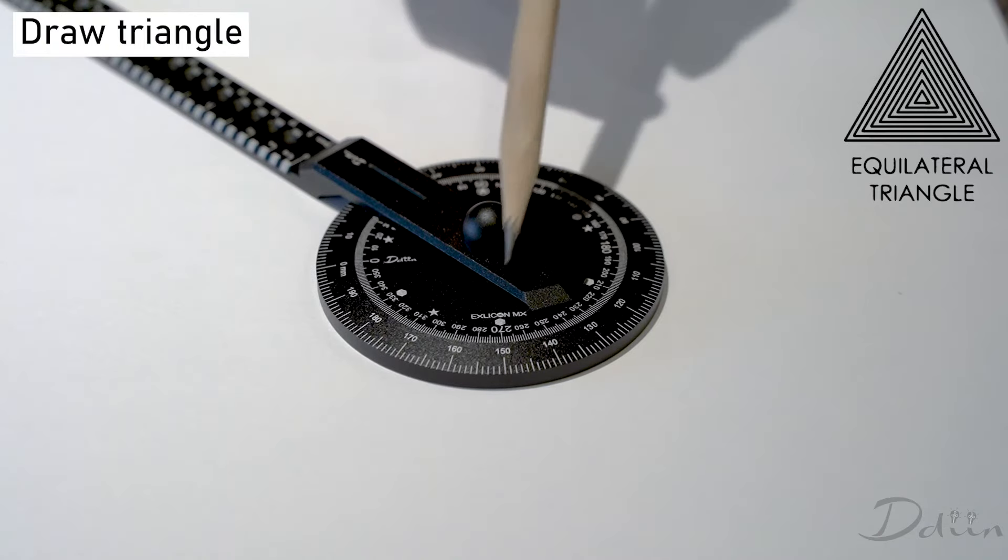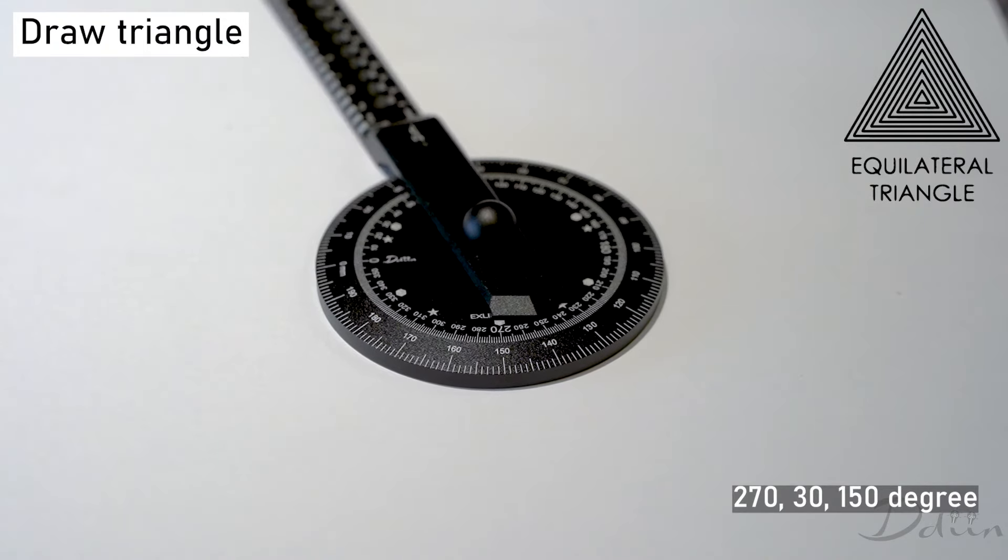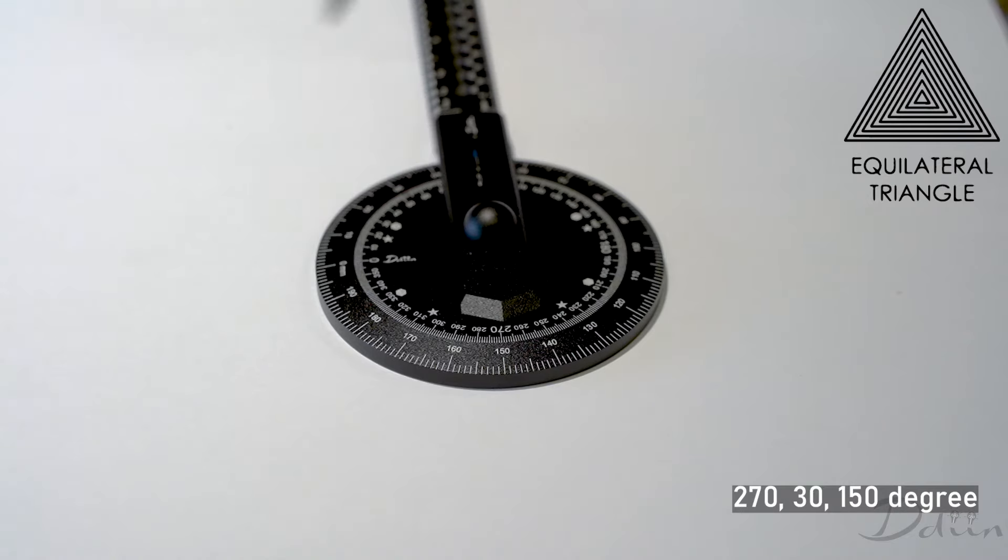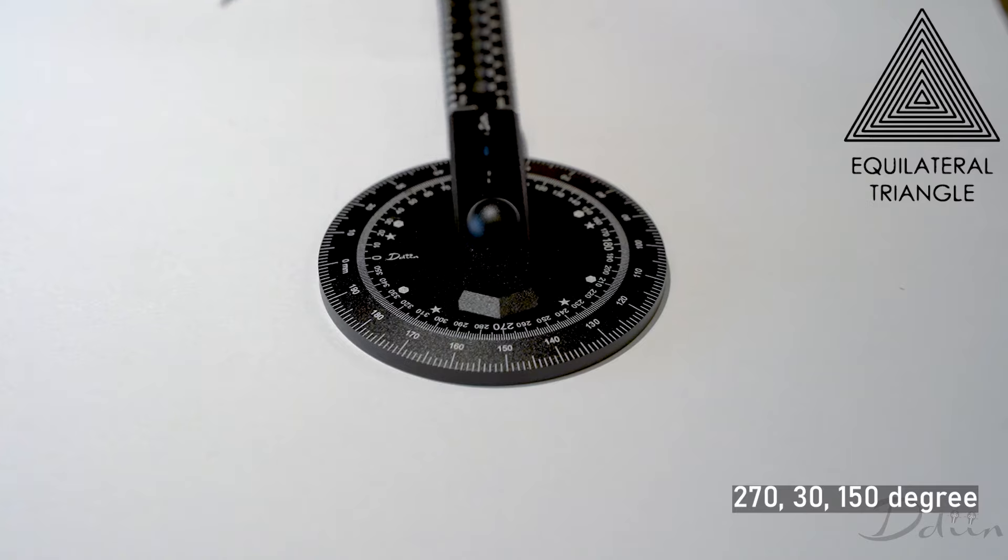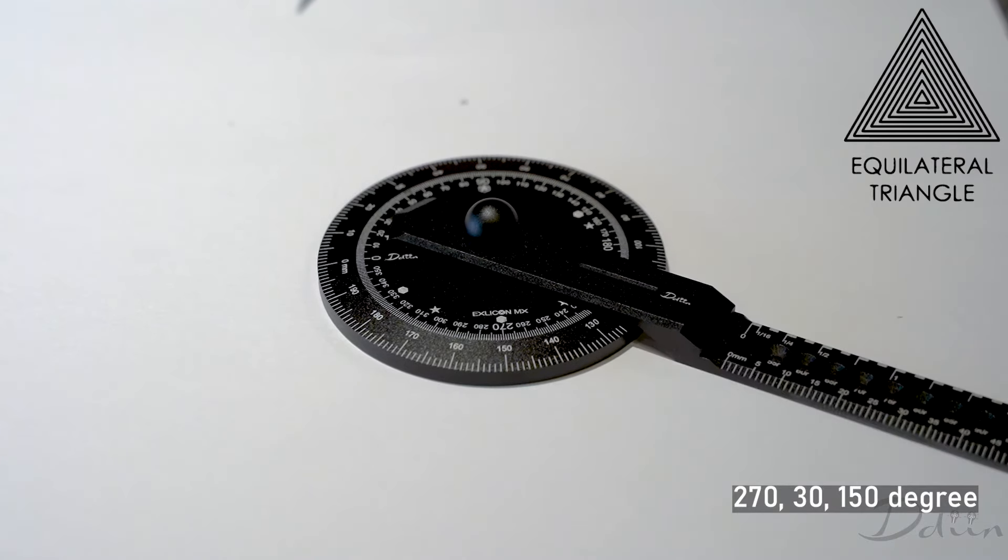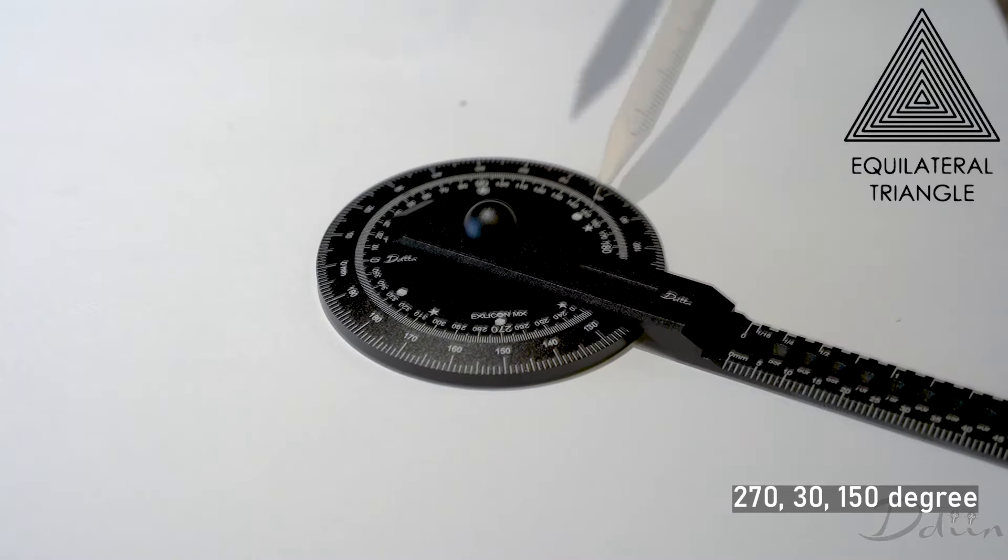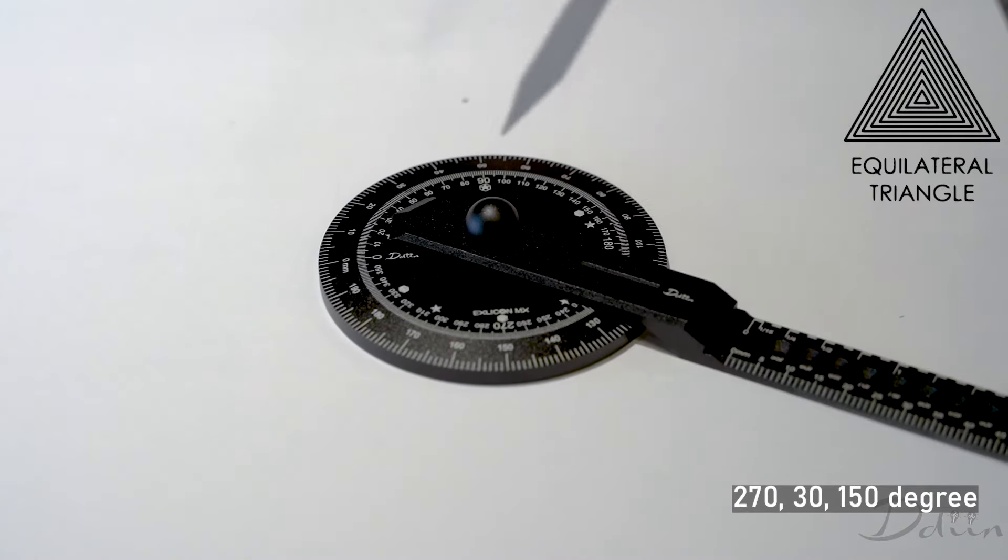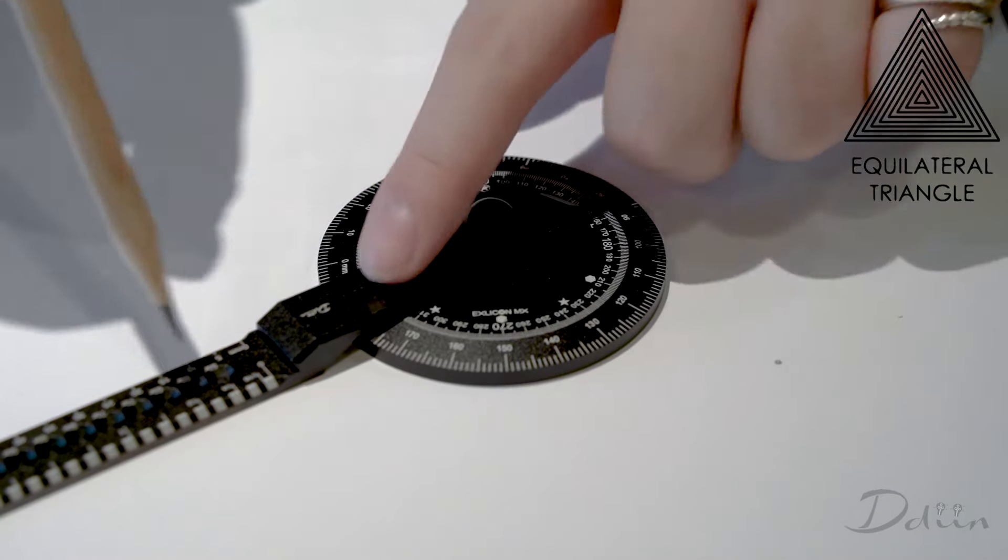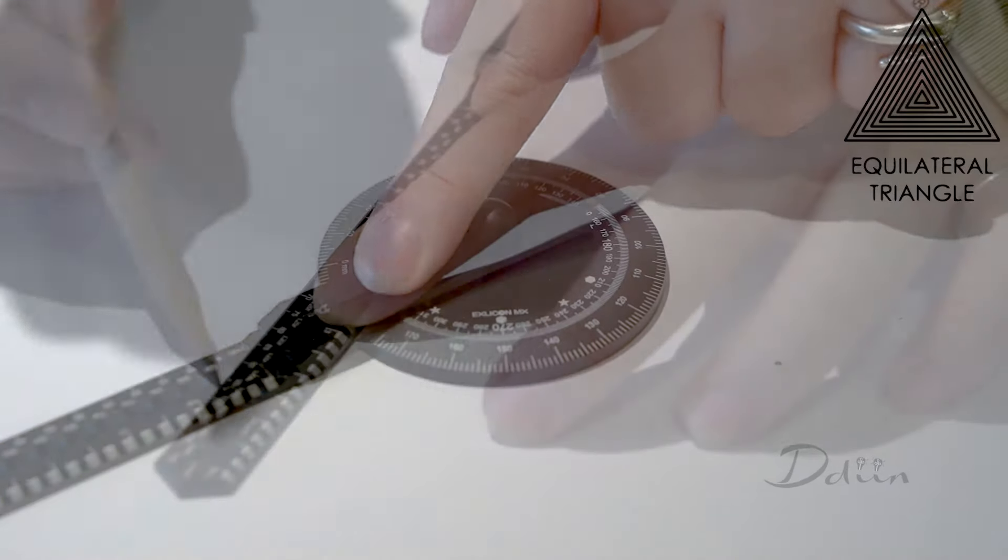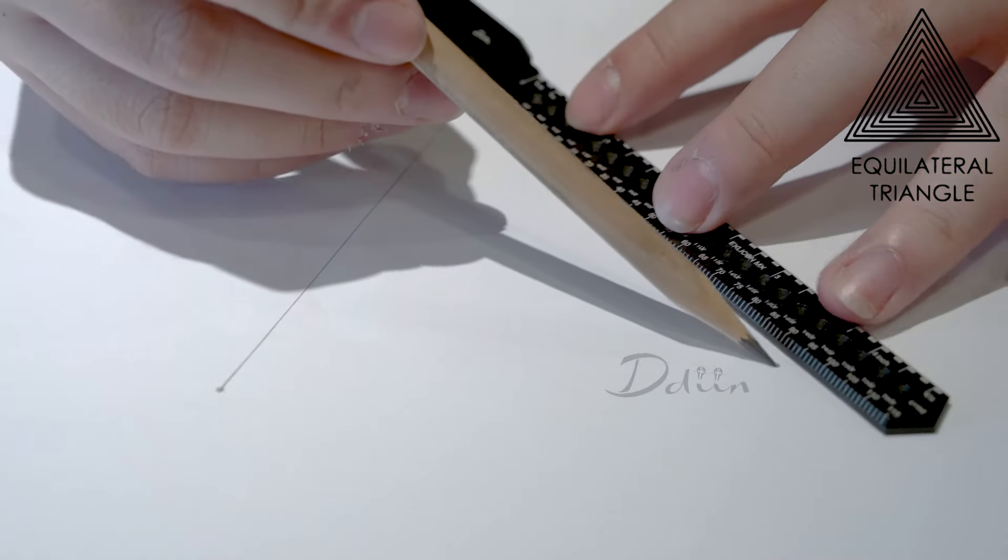To draw a triangle, point the end of the wing to two-seventy degrees and draw a dot. Next, rotate the wing and align it to thirty degrees and draw another dot. Lastly, rotate the wing to align the tail of the wing to one-fifty degrees. Remove the base and the wing and connect the dots using the long wing to form the triangle.